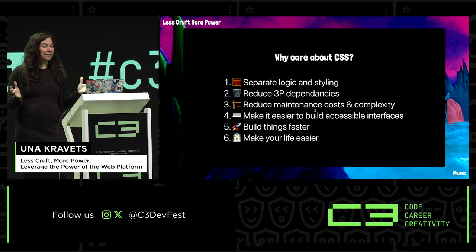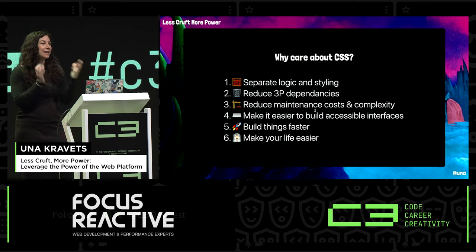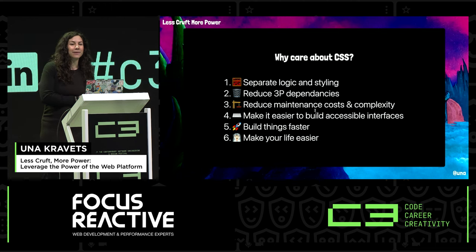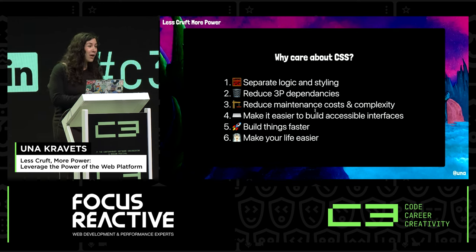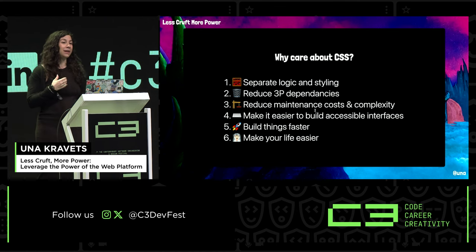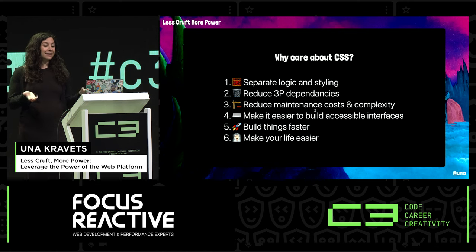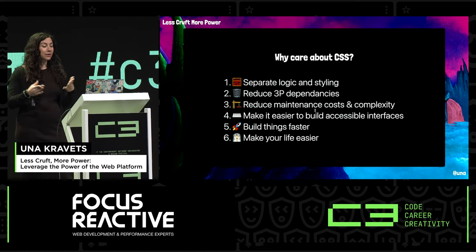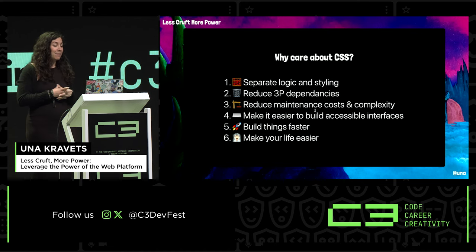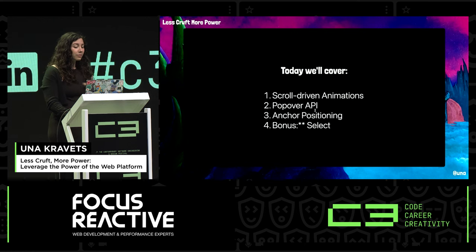So why care about CSS? The first reason is that it lets you separate your logic from your styling. The second is to reduce third-party dependencies — a lot of these features we currently have to hack around or pull in a third-party module and manage it. The third is reducing maintenance costs and complexity. And number four, which I think is a really important point, is it makes it easier to build accessible interfaces.